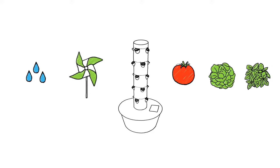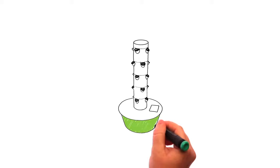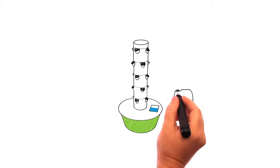Tower Garden has a 20-gallon reservoir at its base that stores the Tower Tonic nutrient solution. Developed by experts in plant and human nutrition, Tower Tonic mineral blend enables superior plant growth and better nutrition from your Tower Garden produce.